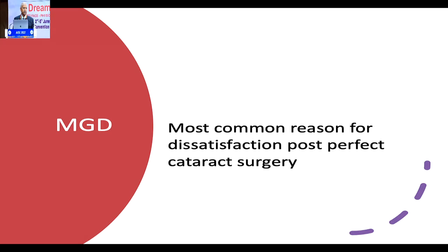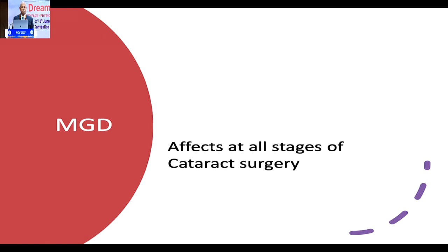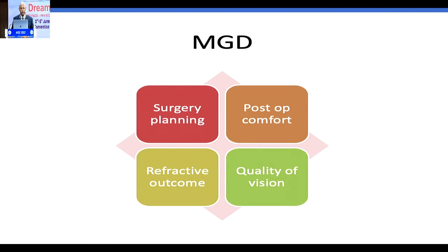This is the most common reason for dissatisfaction after cataract surgery. You say it's 6/6 for distance, and if you put in a multifocal lens it's N6 for near, and the patient is very unhappy with quality of vision. It affects every stage of cataract surgery, starting at surgery planning. Your K-values can be skewed, the axis can be skewed, and eventually you can land up with a refractive surprise just because you did not recognize this dry eye at the surgical planning stage itself.